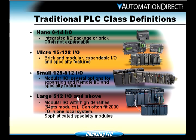The classes of PLCs: Nano PLCs have 0 to 14 inputs and outputs — I/O being your connection to the real world with devices. Nanos have 0 to 14 integrated I/O and are often not expandable, though our DL05 is a Nano that does have one expansion slot. Micro PLCs range from 15 I/O up to 128 and can be brick or modular — our DL06 falls in this class. Small PLCs go from 129 to 512 I/O, with expansion, remote I/O, and a lot of specialty cards available.